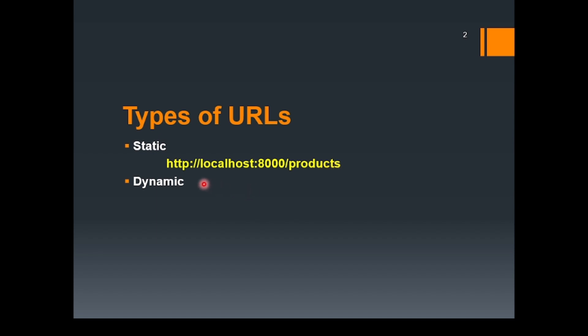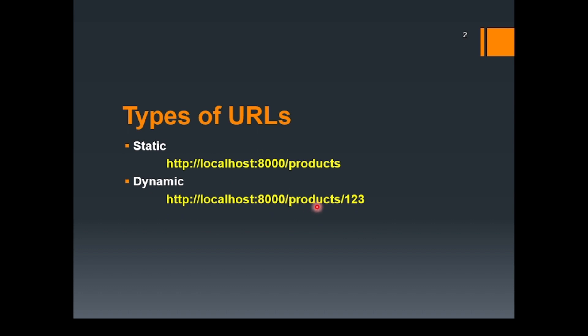Now let's talk about the dynamic URL. A dynamic URL is generated based on specific parameters or user input. The content associated with a dynamic URL can change dynamically. You can see that the path is the same, but there is some other segment after 'products' — this is actually the ID. If the user clicks on a specific product, the user will be taken to another page where that specific product resides. We will be implementing a simple example just like this.